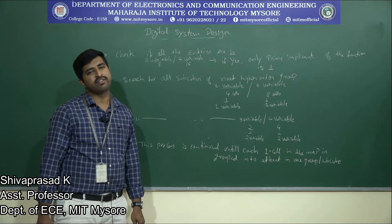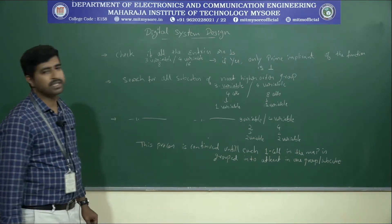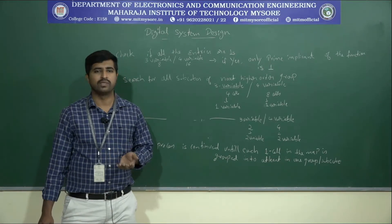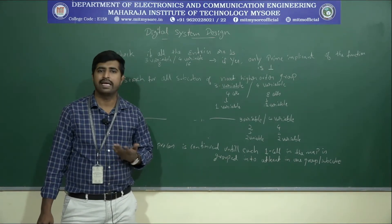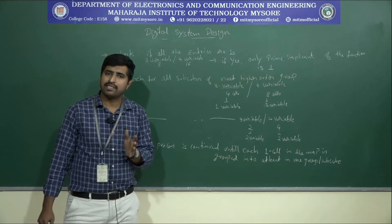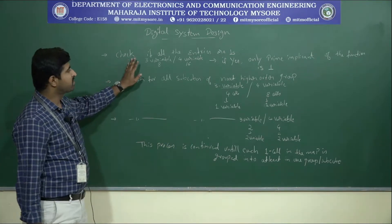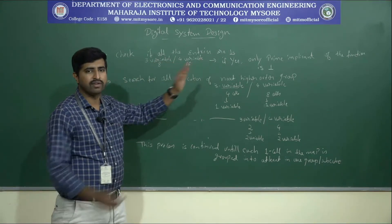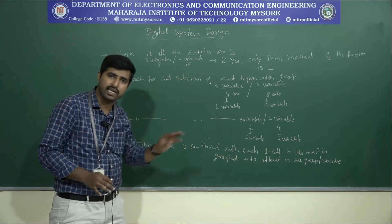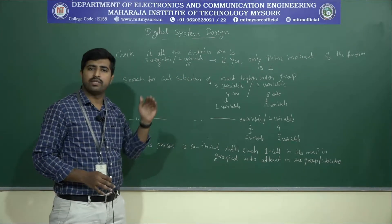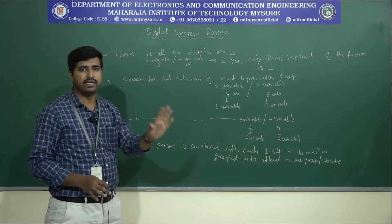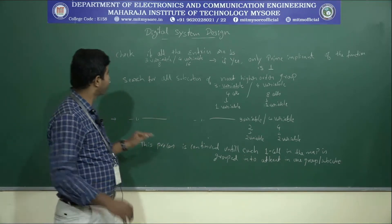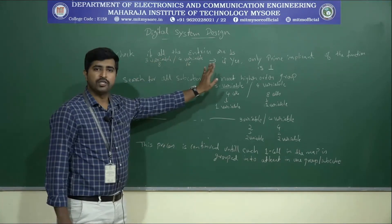Welcome to the next session of our class on digital system design. In the last class we understood how to group logic ones or logic zeros in a K-map. To summarize: first we need to check if all the entries are ones. Assuming the equation is given and you have constructed the K-map with minterms, we check if all entries are logic ones.